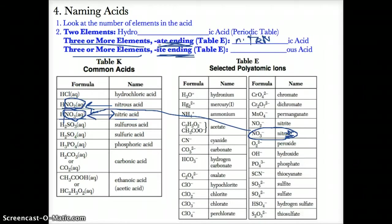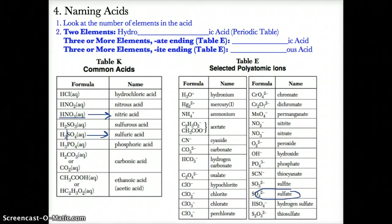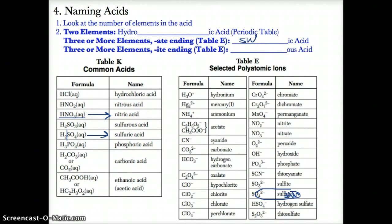If you have three or more elements and an -ATE ending ion from table E, take out the -ATE and replace it with -IC acid. Another example is H2SO4. It contains the ion SO42-. Looking up SO42- on table E, its name is sulfate — ending in -ATE. Getting rid of the -ATE, we name the acid of SO42- sulfuric acid, replacing -ATE with -IC.